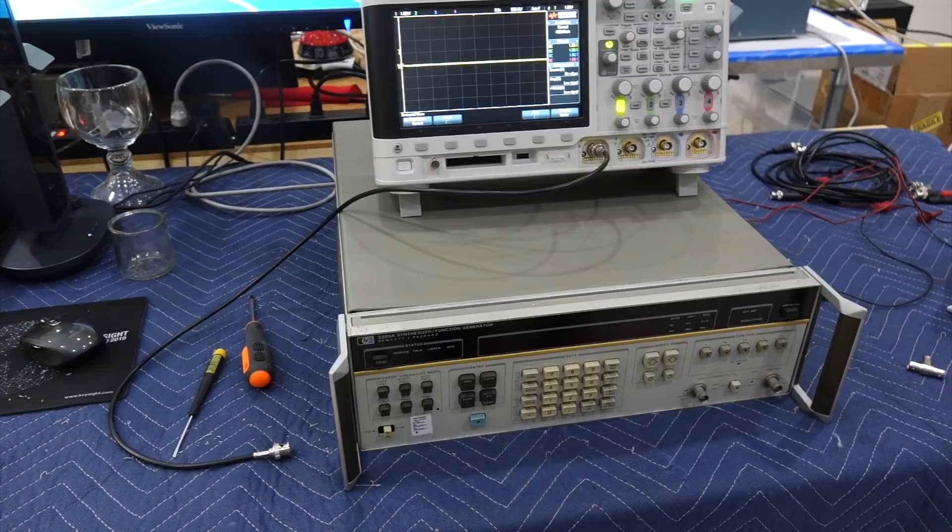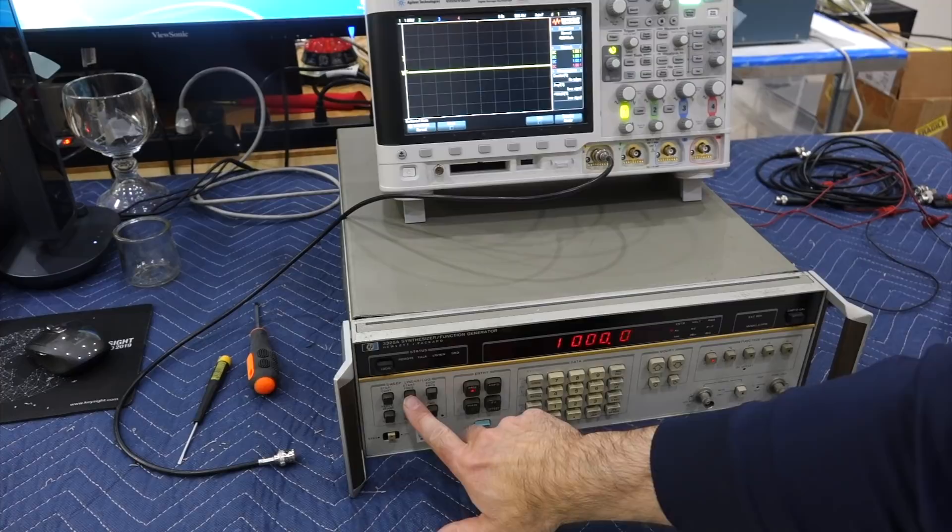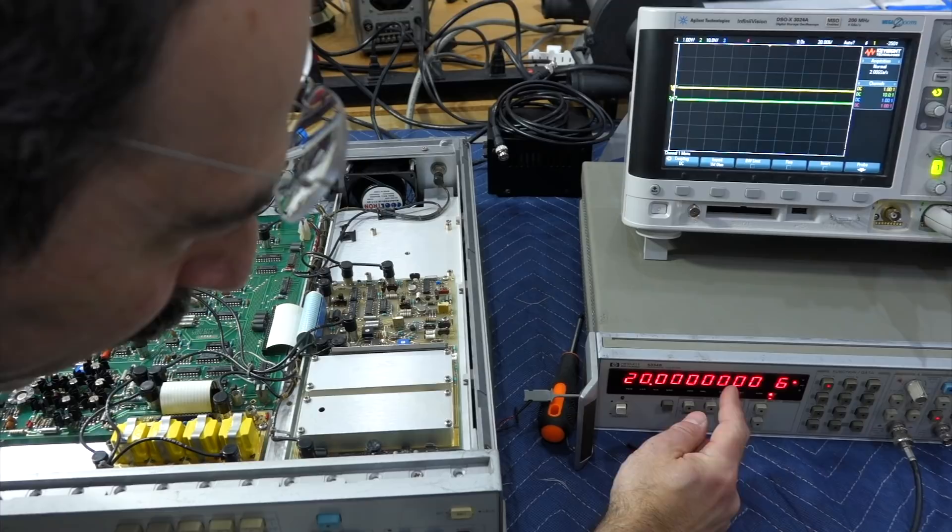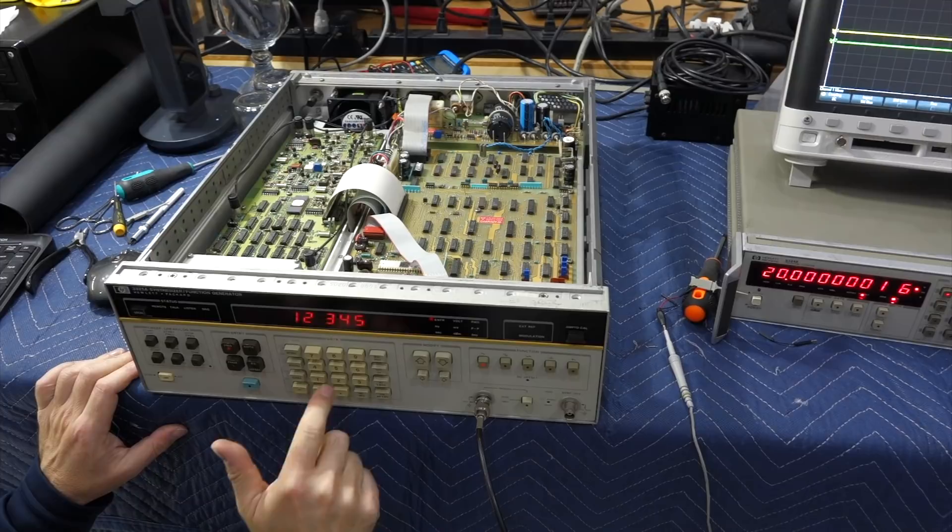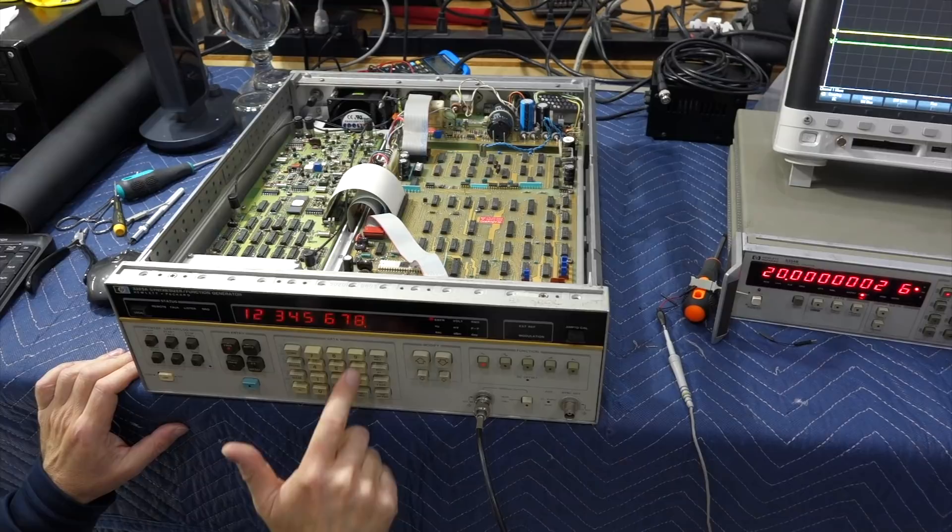Hello. In a recent video, I repaired an HP3325A frequency synthesizer signal generator. Dating back from 1979, it is still an impressive function generator to this day, where you can digitally set the frequency with 10 digits of precision. To achieve this feat, the instrument uses a frequency synthesis technique called fractional-N synthesis.